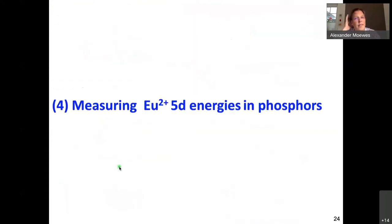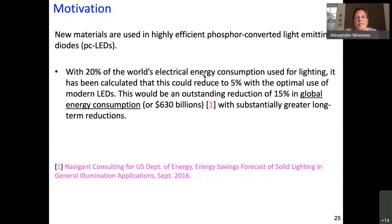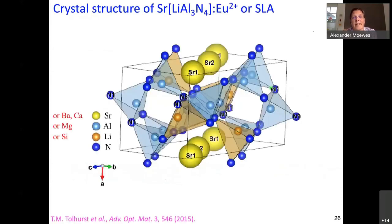Now I want to switch to the last topic: how we measure 5D energy levels in phosphors. The motivation is that these new materials are used in highly efficient phosphor-converted light emitting diodes. The energy savings are gigantic — it has been calculated that 20% of the world's electrical energy consumption goes into lighting, and this would be reduced to 5% if one replaced all incandescent light bulbs with modern PC LEDs. So this is a relatively hot topic.